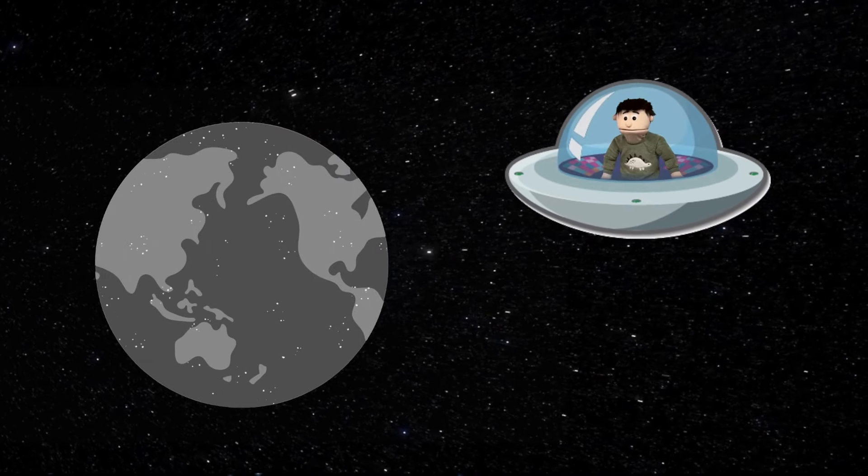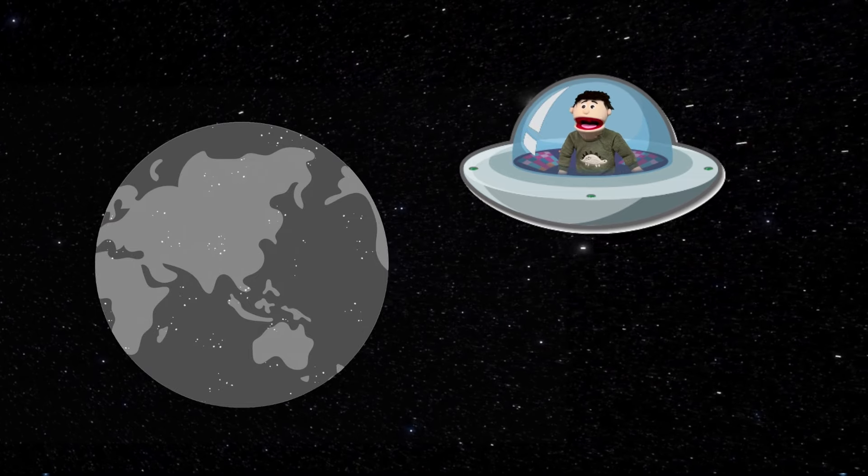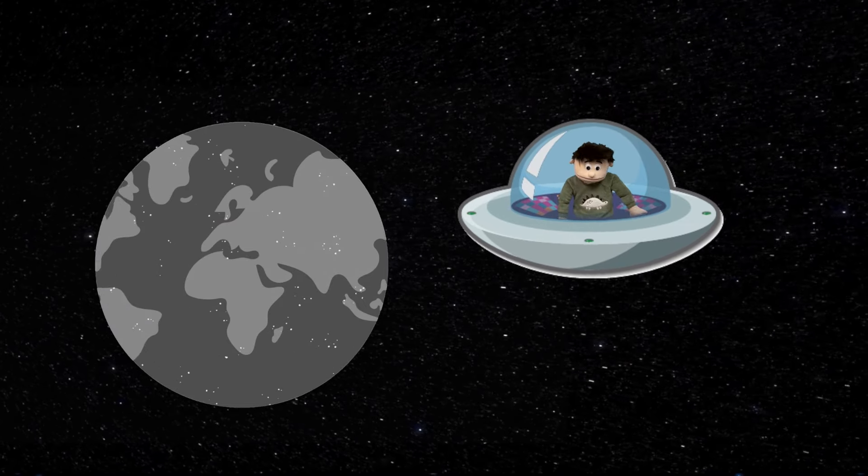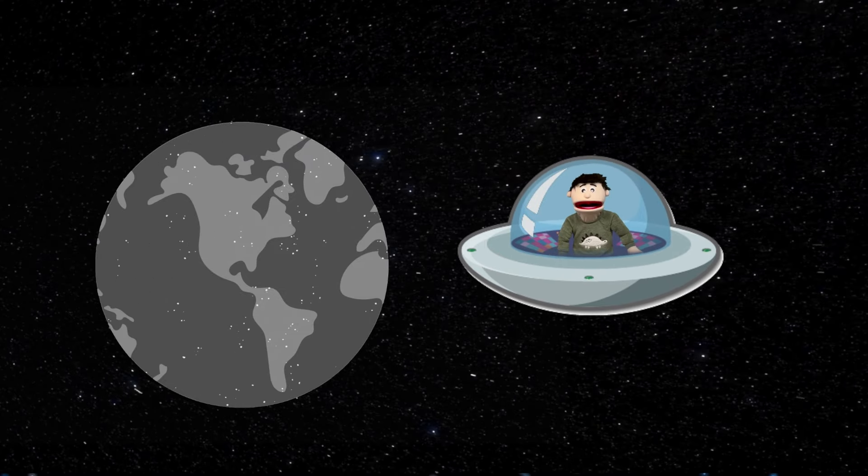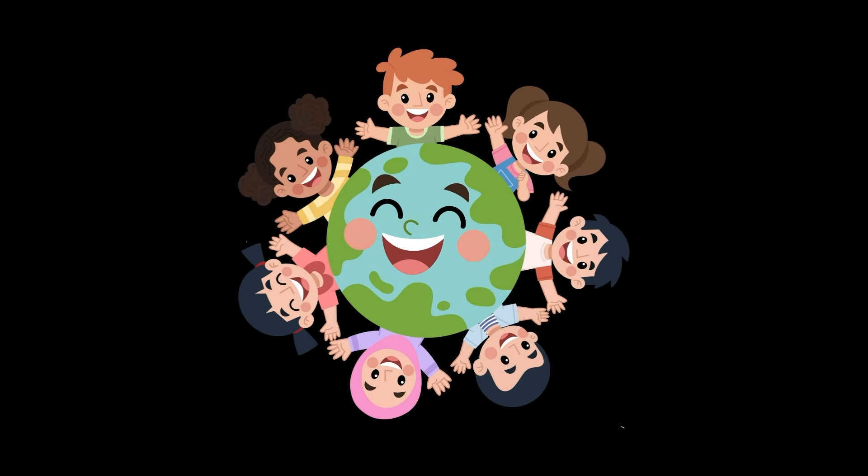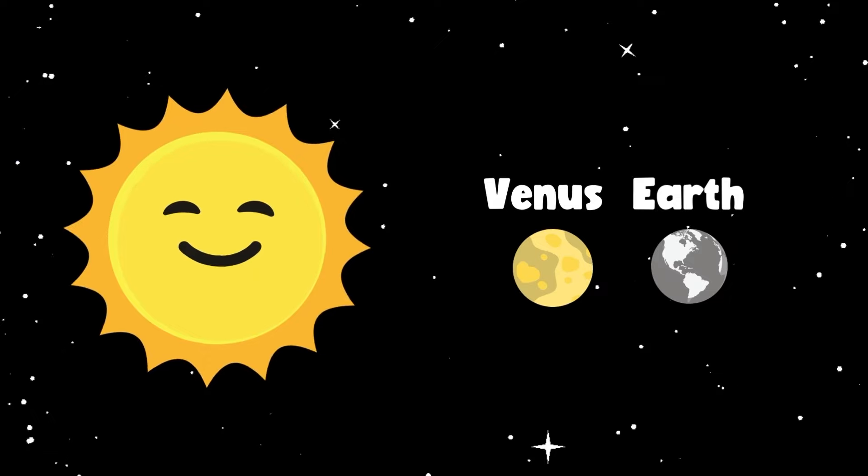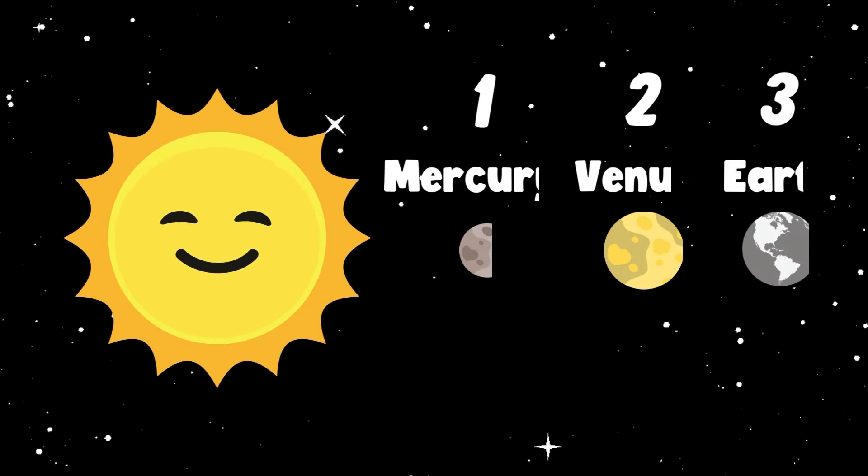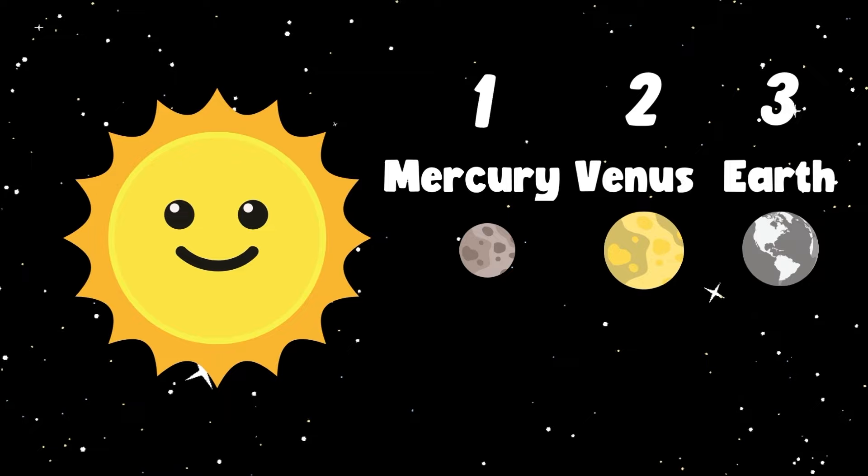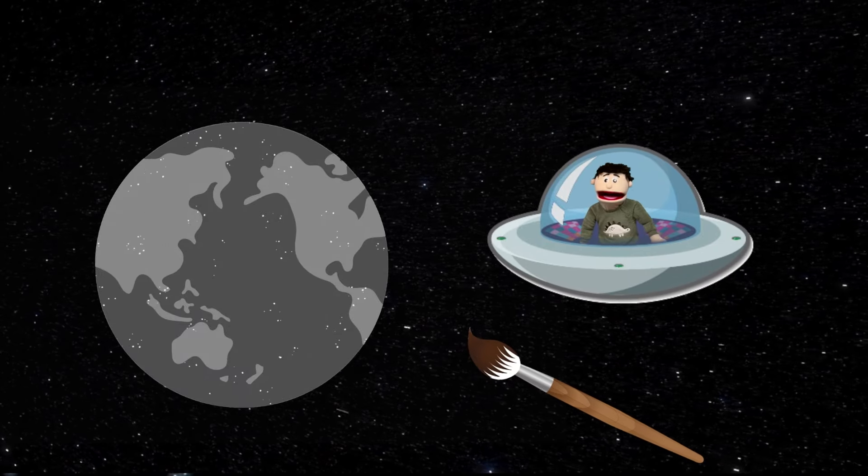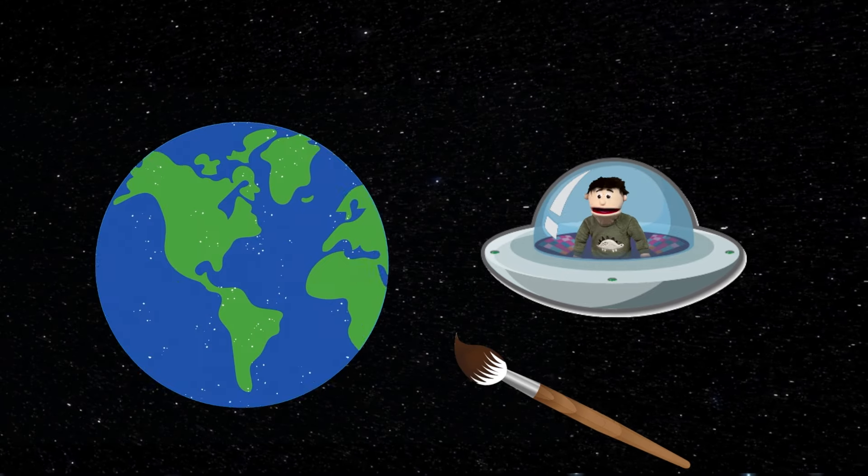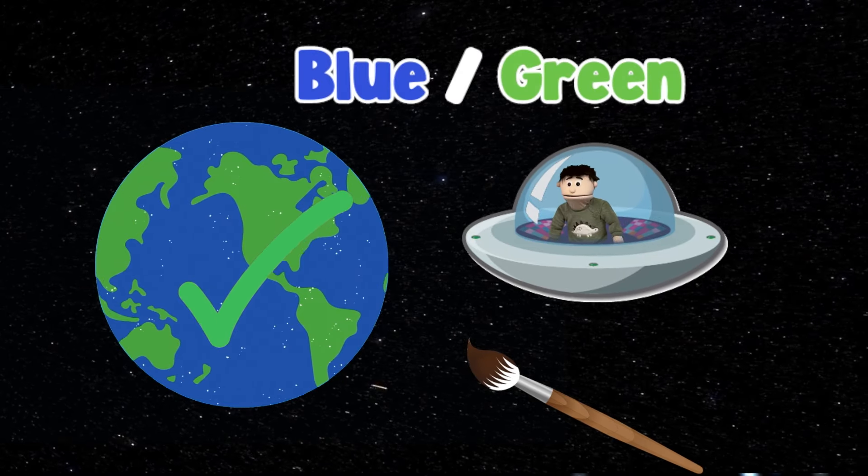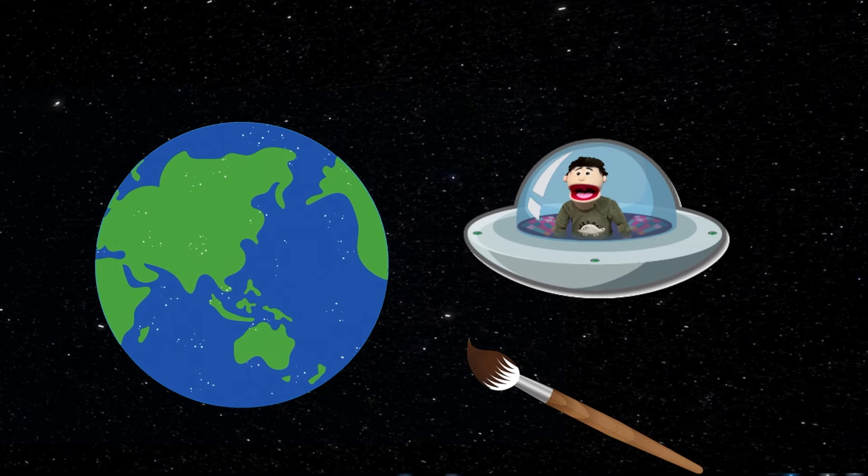This planet looks familiar, doesn't it? Yeah, look at that! All the water and land! I think we live here, don't we? Yeah, there's a lot of people living here on Earth. It's the same size as Venus too! And we're the third planet away from the Sun! Do you guys know what color the Earth is? I bet you do! It's really easy, isn't it? Yeah, it's blue and green, right? Yeah, good guess everybody!